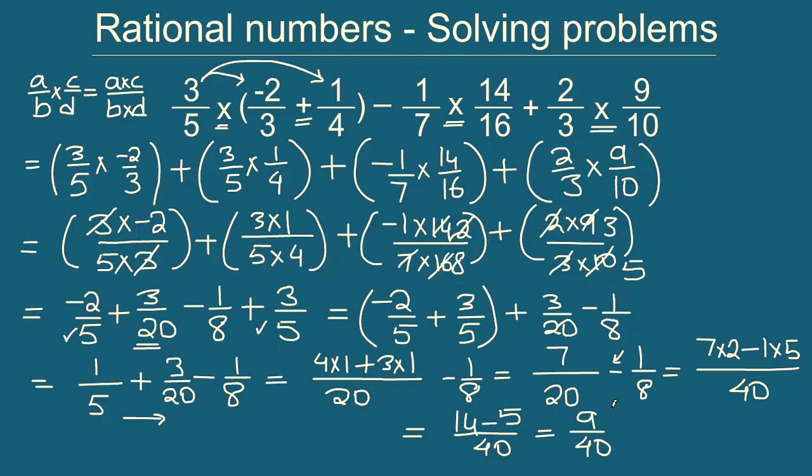9 divided by 40. So the answer to this expression is simply equal to 9 divided by 40. This is how in a step-by-step systematic manner we go ahead and apply all of the order of operations that we have learned via PEMDAS and all the properties that we have learned in the last few days, that is the closure, the commutative and the associative and the distributive property of rational numbers. This is how in a step-by-step manner we apply them.